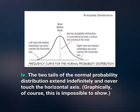Number 4: the two tails of the normal probability distribution extend indefinitely and never touch the horizontal axis. Graphically, of course, this is impossible to show. Most real-life populations do not extend forever in both directions, but for such populations the normal distribution is a convenient approximation.